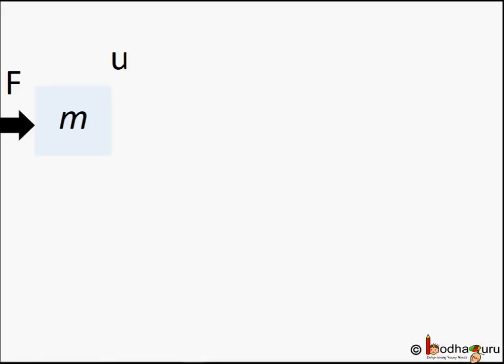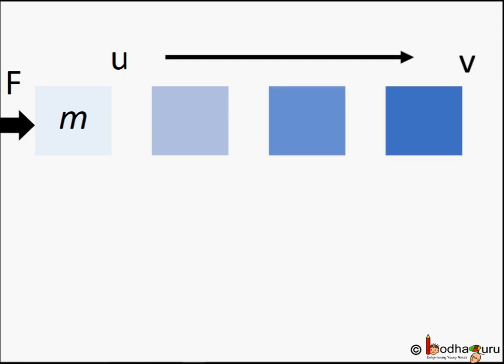Say an object was moving with velocity u and we apply a force F on it in the direction of motion and its velocity increases to v. Say it displaced through distance s while the constant force F was working on it.